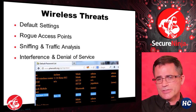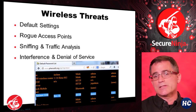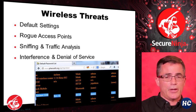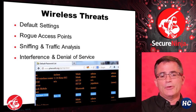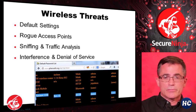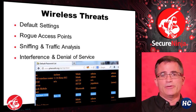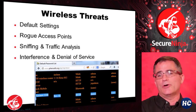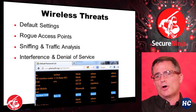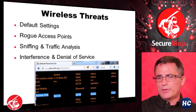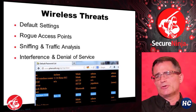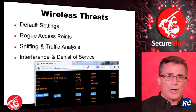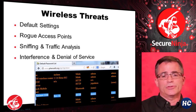We've got sniffing and traffic analysis because the traffic is wireless — as long as we have a receiver in the air, we can intercept it. Then there's interference and denial of service. Wireless is susceptible to interference from microwave ovens, cell phones, and similar devices. When doing attacks against wireless, we have to make sure we don't flood the wireless and cause an actual denial of service.